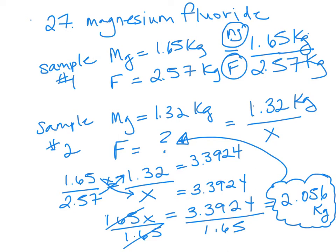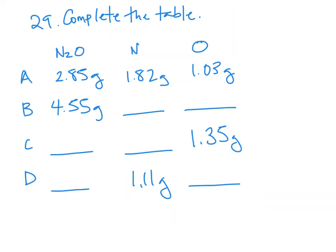Next I'm going to show you how to do question number 29. Here we are in question number 29. For question 29 we have the compound dinitrogen oxide, so 2 nitrogens to 1 oxygen.